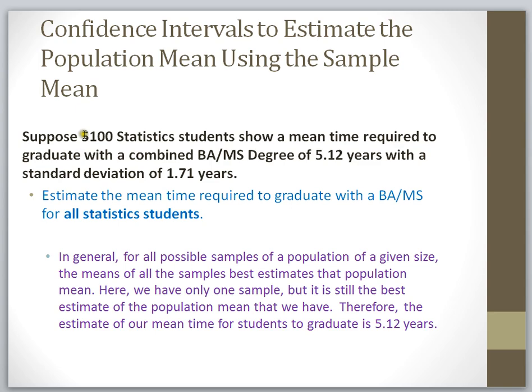Okay, in this case, suppose I have 5,100 statistics students and I show a mean time required to graduate for these students with a combined bachelor-master's degree of 5.12 years with a standard deviation of 1.71. So in this example, my sample size is 5,100. The mean or the average, and in this case, the sample average years for these students to graduate is 5.12. So that's my sample mean. And the sample standard deviation is 1.71 years. So all the information that I've collected, the 5.12 and the 1.71, is all in reference to my sample students.